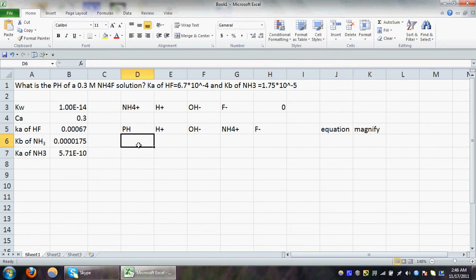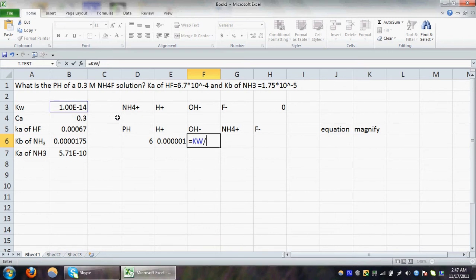We will put any value of the pH at the beginning. I will put the pH at 6. Then we need to find our H+ value, which is simply equals to 10 to the power of minus our pH value. Hit enter. Then we have to find our OH value, which is equals to our Kw value divided by our H+. Hit enter.